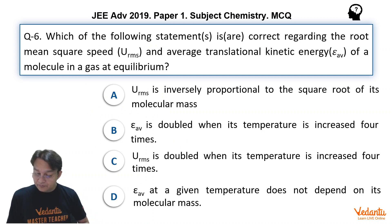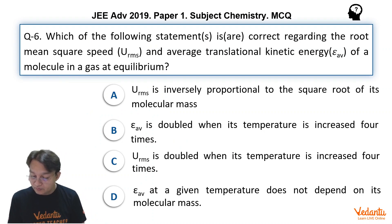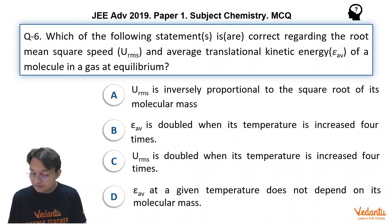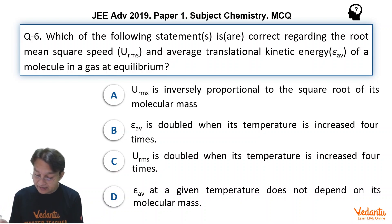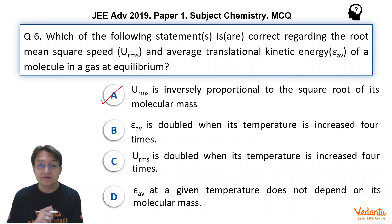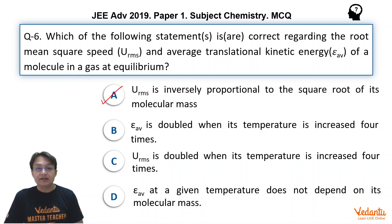The first option is: URMS is inversely proportional to the square root of the molecular mass. It is formula-based, and you can see from the formula that it is simply reflected that URMS is inversely proportional to the square root of the molecular mass. The first option is absolutely correct.